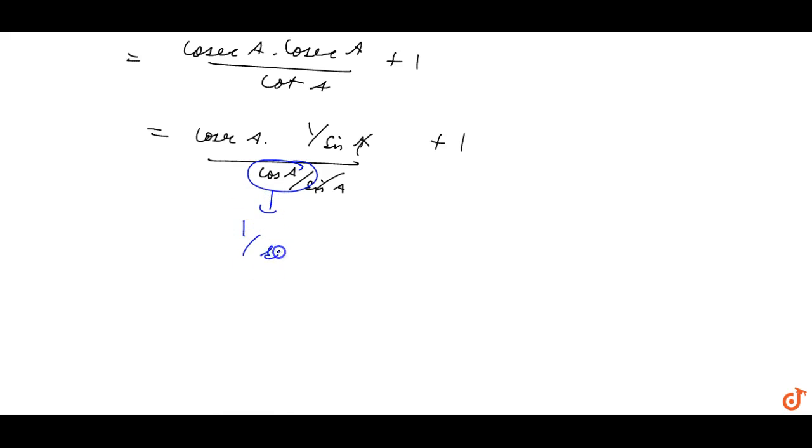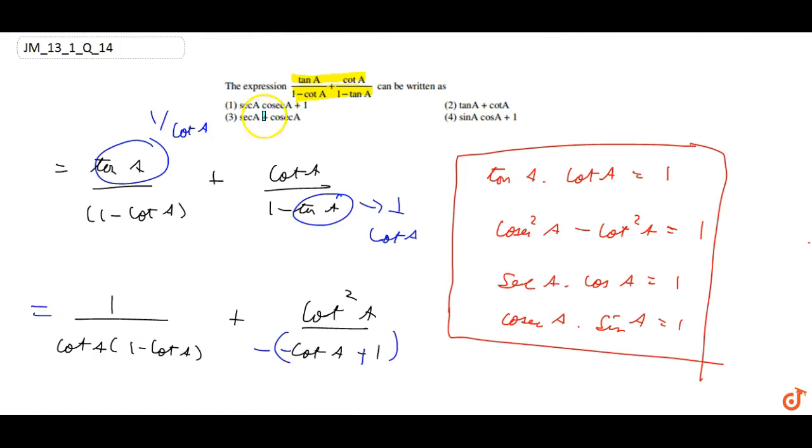Cosec A upon cot A can be written as sec A upon cosec A which equals 1 by sec A. So sec A comes up and we get sec A into cosec A plus 1. So our answer is option 1, which is the correct answer.